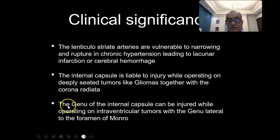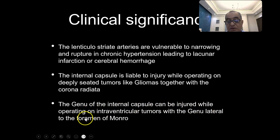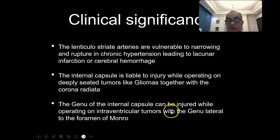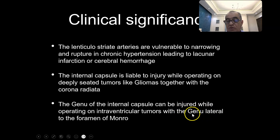Another clinical importance: the genu of the internal capsule can be injured while operating on intraventricular tumors, because the genu is lateral to the foramen of Monro. When operating on an intraventricular glioma, working on the lateral wall of the lateral ventricle, at the level of the foramen of Monro, the fibers of the internal capsule are very close. You might injure the genu or the anterior two-thirds of the posterior limb and get hemiplegia while operating intraventricularly.